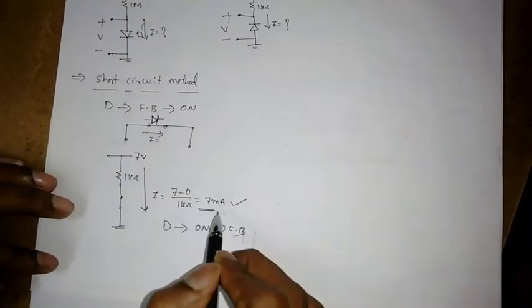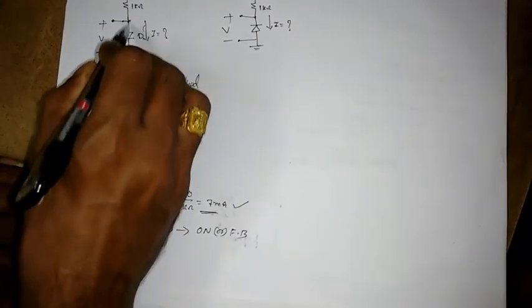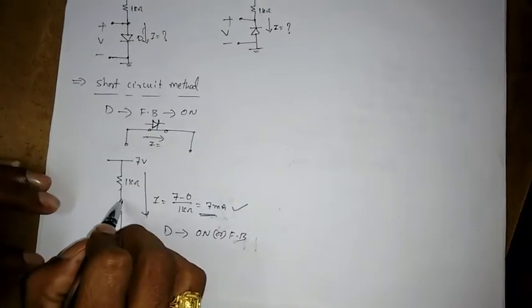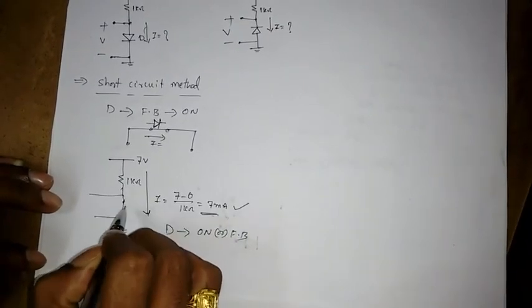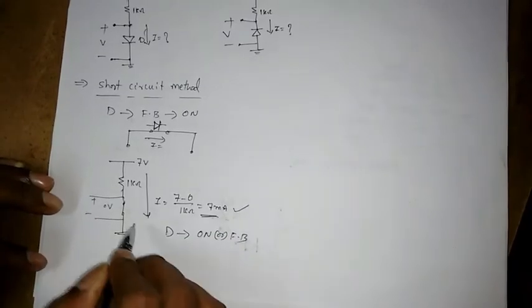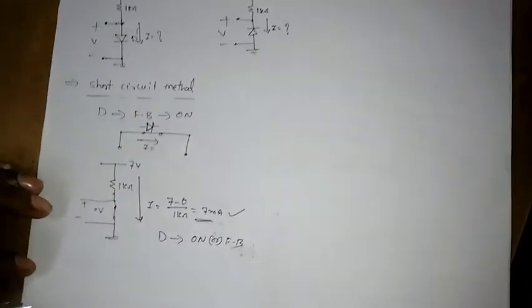Now, so I is equal to 7 milliampere. Now we need to find what is the diode voltage across this. So whenever there is a short circuit. So see this ground is connected to here. So that means it is simply 0 volt.